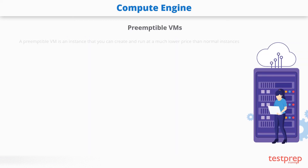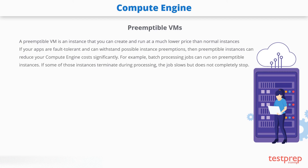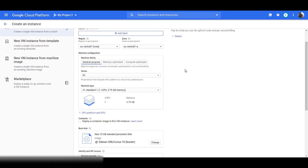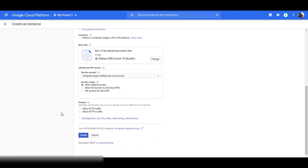Preemptible VMs: A preemptible VM is an instance that you can create and run at a much lower price than normal instances. If your apps are fault tolerant and can withstand possible instance preemptions, then preemptible instances can reduce your Compute Engine costs significantly. For example, batch processing jobs can run on preemptible instances. If some of those instances terminate during processing, the job slows but does not completely stop. Preemptible instances complete your batch processing tasks without placing additional workload on your existing instances and without requiring you to pay full price for additional normal instances. You can add preemptible instances under the additional settings section in VM instances.